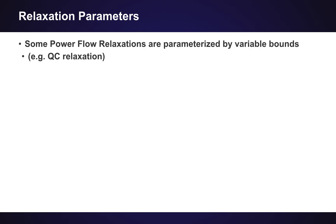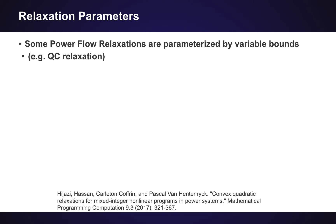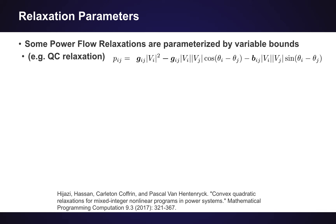What does this have to do with power flow relaxations? Some types of power flow relaxations are highly parameterized by the variable bounds in your optimal power flow problem. One of the most popular ones with these kind of parameters is called the QC relaxation, which we proposed a number of years back. The key observation is that if you look at the real number representation of a power flow constraint, you have things like voltage magnitude squared, the product of voltage magnitudes, and cosine and sine terms with voltage angle differences. In practice, the voltage angle differences might be fairly small.